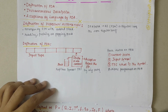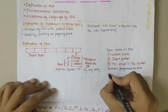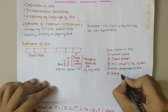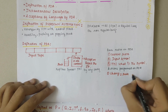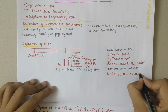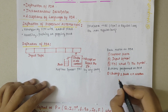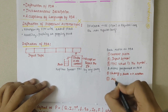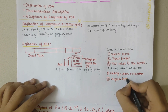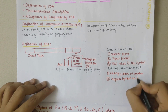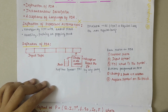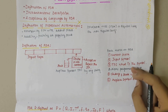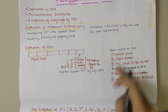The actions performed on PDA include changing from one state to another state, or remaining in the same state. The next action is to replace the symbol on the stack.